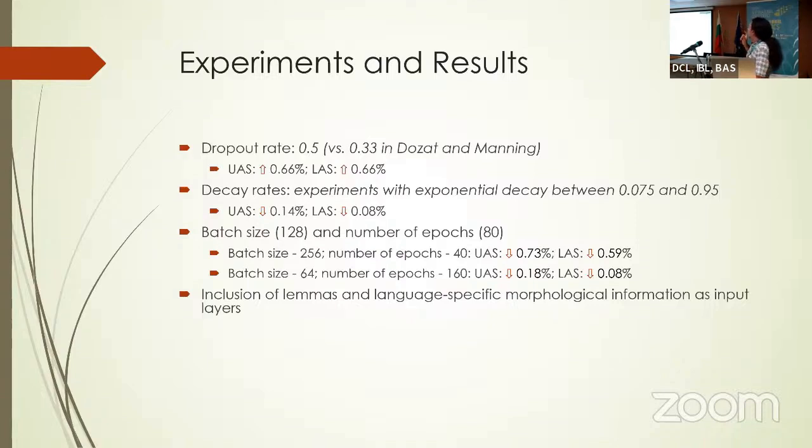Another option that I have changed several times was the input levels. And as I showed you on the previous screen with the model architecture, adding lemmas and the language-specific morphological information as input layers actually gave the most boost to the model. And here we have 0.86% for unlabeled score and 1.31% raise for labeled score, which I think the reason here should be Bulgarian being really highly inflected language. And this language-specific morphological information gives the needed information to the algorithm to predict better.